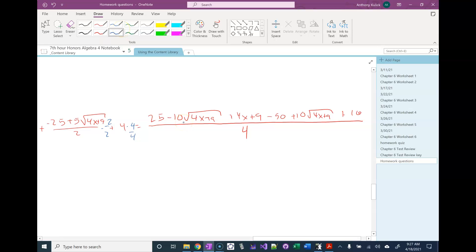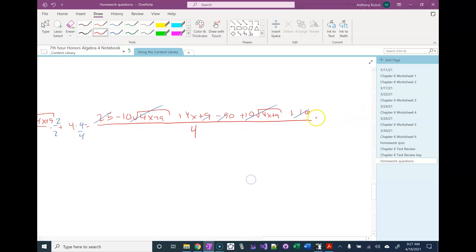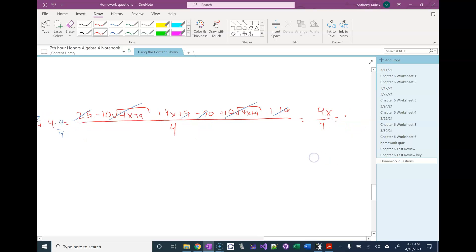So I have a negative 10 square root 4x plus 9 and a positive 10 square root 4x plus 9, so those are going to add to give me 0. I have a 9 or a 25, a 9, and a 16. Those are going to add to give me 50, and then I have a negative 50, so those all cancel out. So I'm left with then just 4x over 4, and that's just x. And that's one half.